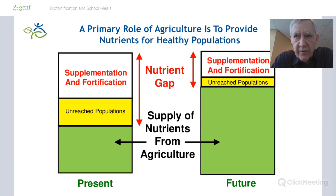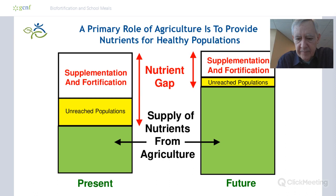As we look forward into the future, one of the key things that needs to happen is that agriculture needs to provide a much higher percentage of the minerals and vitamins required by developing country populations. It's because of the shortage and high prices of non-staple foods that we see so much mineral and vitamin deficiency. We'll always need supplementation and fortification, but it's much more efficient and sustainable to provide nutrients through the food supply.